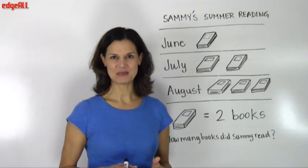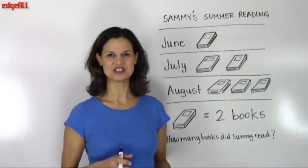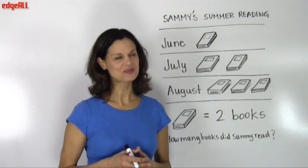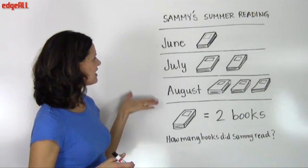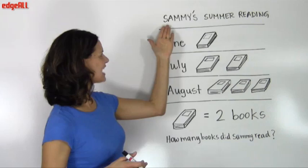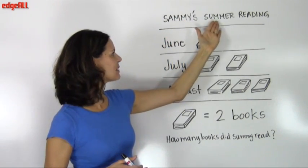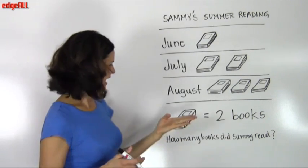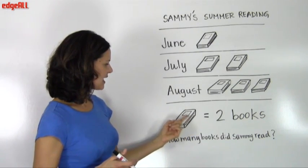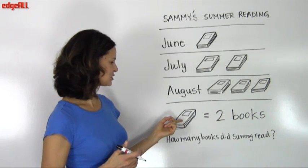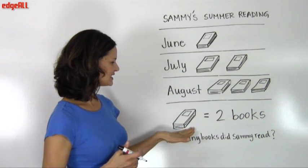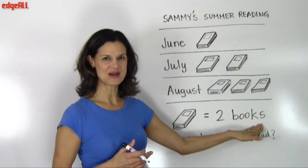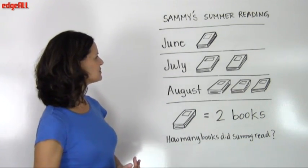Let's look at an example of answering a question using the information given to us in a pictograph. We have a pictograph here that tells us, from the title, that this is Sammy's summer reading. And the first thing we want to look at is our key, and we can see in our key, that one book symbol equals two books. So, two books read by Sammy in the summer.